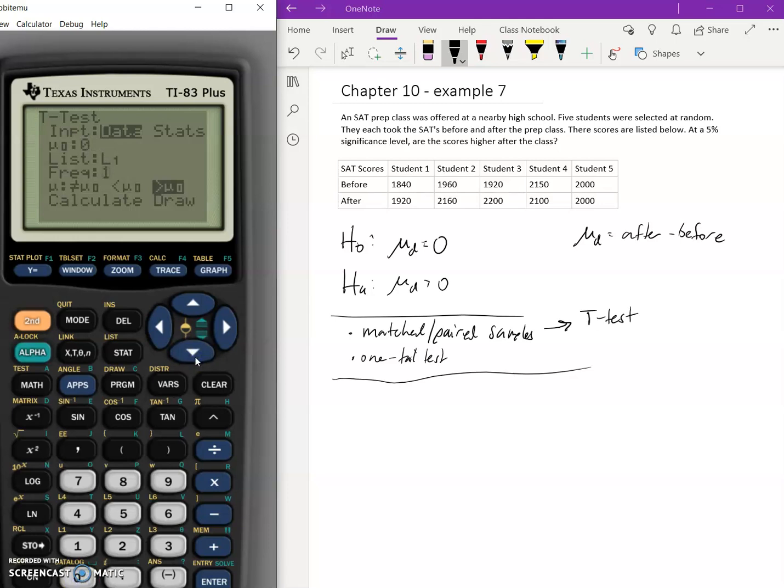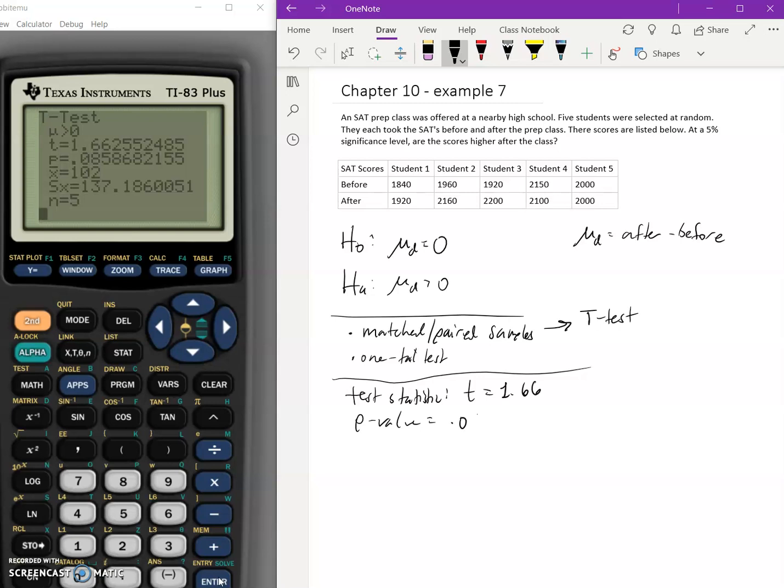Some of you might have L2, but in this case the frequency is just one. For the alternative hypothesis, we're wondering is it larger than that zero value? What we get is a test statistic t equals 1.66, and our p-value equals 0.086.